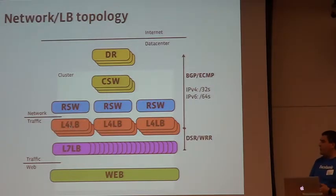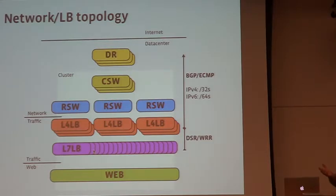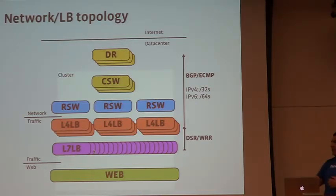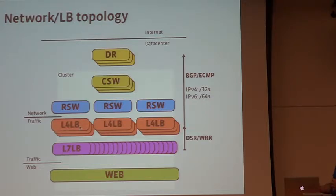From the rack switch we have L4 load balancers, then L7 load balancers. The L7 load balancers are reverse proxies — like HAProxy, Nginx, or Apache. When you talk to Facebook, you're always talking to L7 load balancers; we never establish a direct connection to web servers. Only the L7 load balancers talk to the web servers. These also have caching and all the business logic. The L4 layer distributes traffic to the L7 layer.